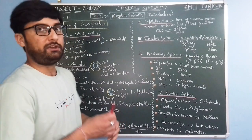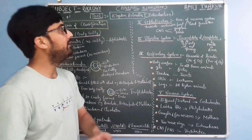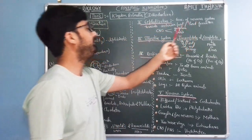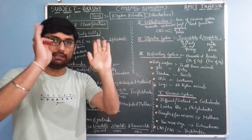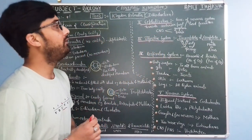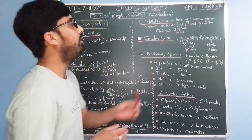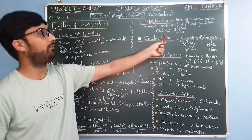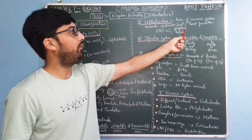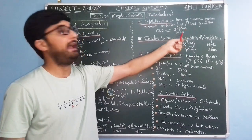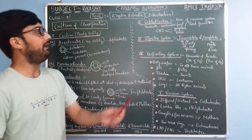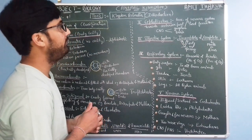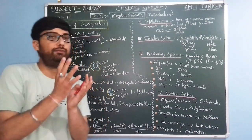Cephalization means the formation of the head part. Cephalization means concentration of the nervous system towards the anterior part, or head formation, like the central nervous system — the network of ganglia and brain. So the central nervous system is an example of cephalization — how the head is formed.